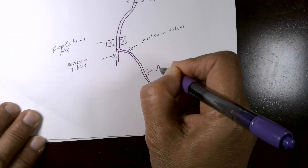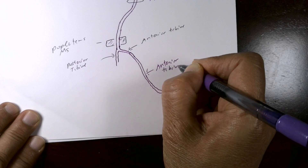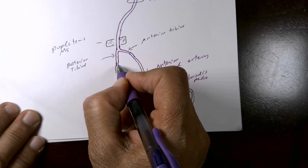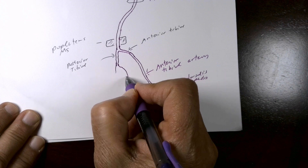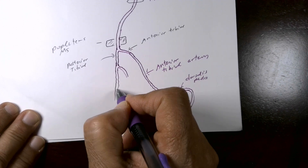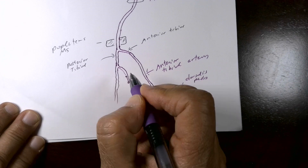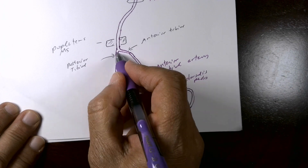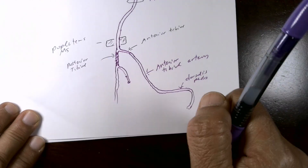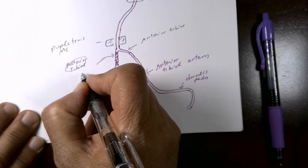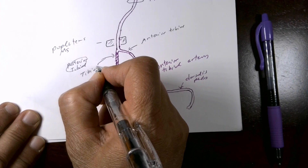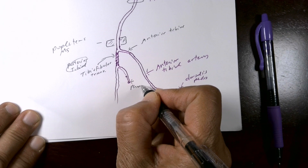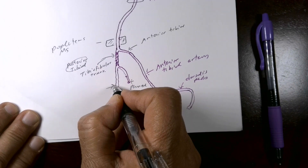Posteriorly, the posterior tibial artery gives a major branch called the peroneal artery, then continues as the posterior tibial artery. The segment before this division is sometimes called the tibiofibular trunk. So the tibiofibular trunk, also called the tibio-peroneal trunk, splits into the peroneal (fibular) artery and the posterior tibial artery.